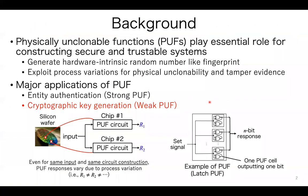Physically Unclonable Functions, PUFs, are essential for constructing secure and trustable information systems nowadays. PUFs exploit process variations to generate hardware intrinsic numbers, and are used as hardware root of trust due to their physical unclonability and tamper-evident features. PUFs are classified into strong and weak PUFs. Strong PUFs such as arbiter PUF have large input space, and the main application of strong PUF is entity authentication using challenge and response protocol.